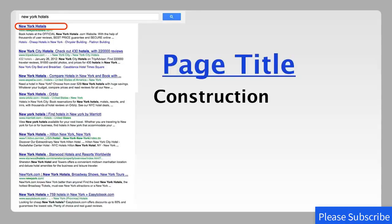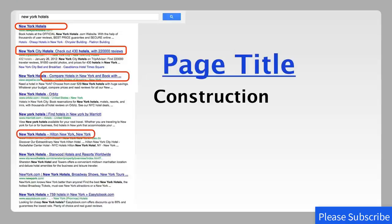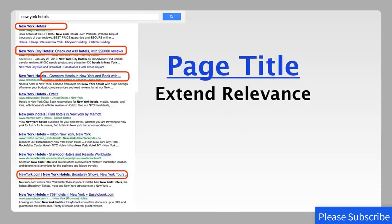There are a couple of ways you can build page titles. You can be short and sweet — if someone types in 'New York hotels' and that's where you want to rank, you just make your page title 'New York hotels.' Or you can make it longer and provide a unique sales proposition. TripAdvisor says 'New York City hotels — check out 430 hotels with 220,000 reviews.' Not only did they use the right keyword, but they expanded to give a sales proposition. Expedia includes a brand name and location. There are many ways to construct your page title based on brand, what you do, and your type of business.